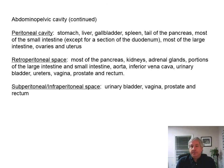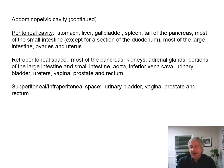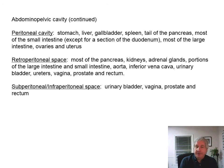The peritoneal cavity has certain organs in it, and then there are things that are not in the peritoneal cavity — in what's called the retroperitoneal space, or subperitoneal/infraperitoneal. Subperitoneal organs include the urinary bladder, vagina, prostate, and rectum. Retroperitoneal organs include the pancreas, kidneys, adrenal glands, portions of the large and small intestine, aorta, inferior vena cava, ureters, vagina, prostate, and rectum. The peritoneal cavity contains the stomach, liver, gallbladder, spleen, most of the small intestine except a small section of the duodenum, most of the large intestine, ovaries, and uterus.